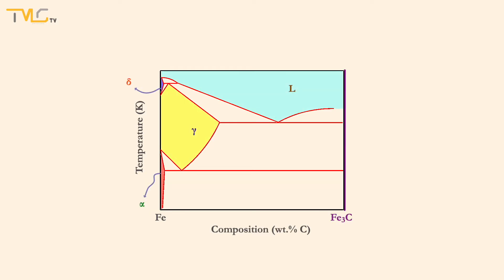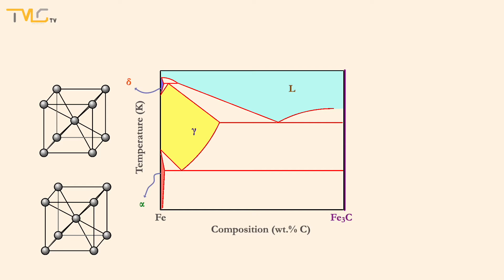The BCC phases are called ferrite. There are two different ferrite regions called delta and alpha. Yet most of the time, the alpha and delta ferrite distinction is not used, and both are just called ferrite.